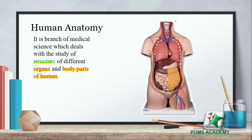The human body includes external parts such as the head, arms, and legs. If we look at internal organs, we can see the lungs, liver, stomach, small intestine, large intestine, and heart. These are all structures of the human body, and studying them is called human anatomy.